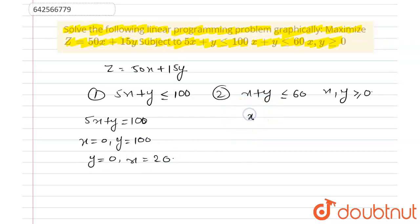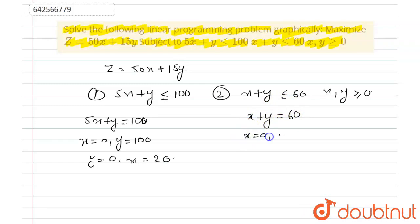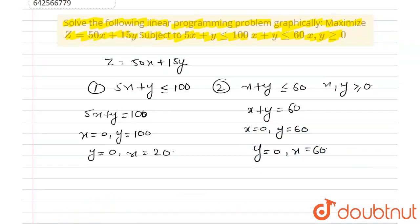Similarly, we take the equation x plus y ≤ 60. First we draw its straight line x plus y equals 60. Its coordinates are: when x equals 0 then y equals 60, and when y equals 0 then x equals 60. Now we have to plot the curve.